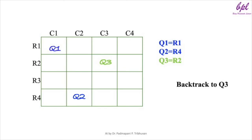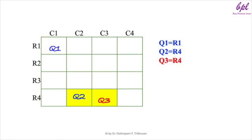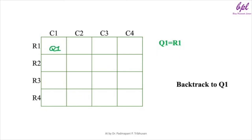We had placed q3 in r2. Now we place queen 3 in row 3 but this violates the diagonal constraint with both q1 and q2. We then try q3 = r4 but this violates the row constraint with q2. No valid position is available for q3, so we backtrack to queen 2. Since all positions for q2 have been tried, we backtrack further to queen 1 and move q1 to row 2, which does not violate any constraint.